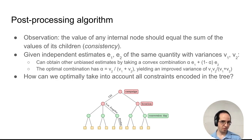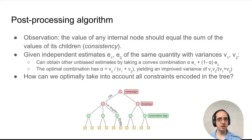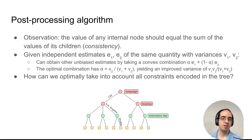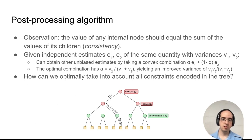The sum of the estimates of the children provides an independent estimate for the value of the parent. When we have independent estimates of the same quantity, we can combine them to obtain other estimates by taking convex combinations of them. The optimal convex combination has weights inversely proportional to the variance of the two estimates and yields an estimate that has lower error than either original estimate. This allows us to improve the error when we have multiple individual estimates of the same quantity.